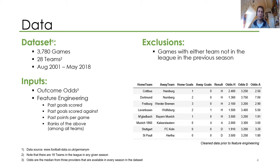There are not all that many features you can retrieve from the website, so I did a lot of feature engineering. Note that odds home, odds draw, and odds away are the median of three bookmakers that are available in each and every season that my dataset covers.